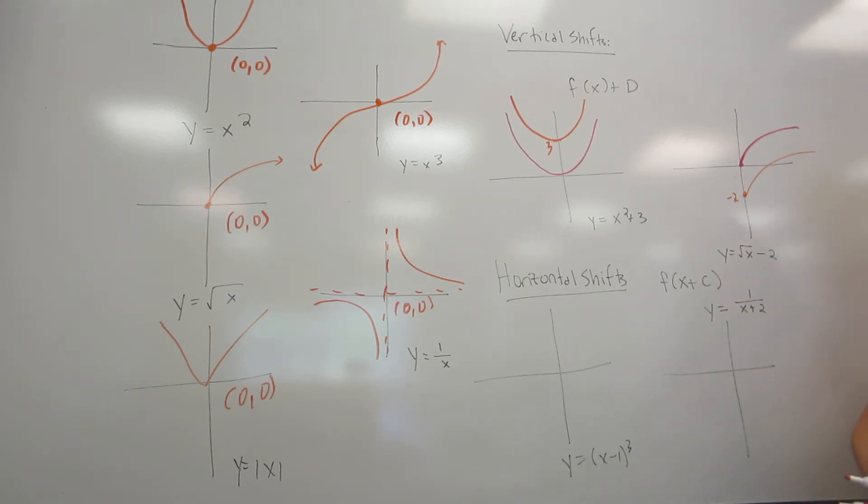Horizontal shifts are similar, only there's a little bit of a twist. A horizontal shift is when you add or subtract a number inside the main function. So you notice the minus 1 is inside the cube, the plus 2 is inside the fraction.